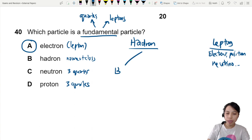Hadrons, there's two groups. They are baryons and they are mesons. What's the difference? Baryons got three quarks. Mesons got two quarks.